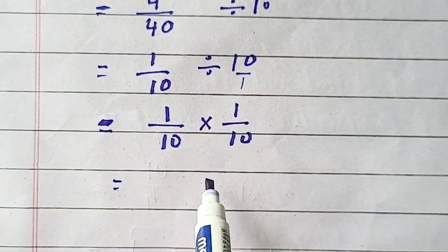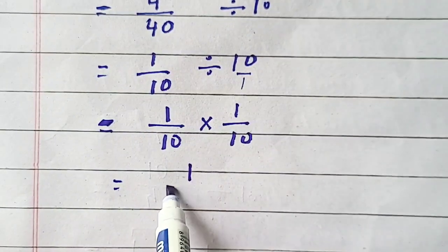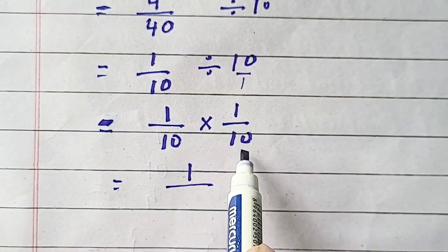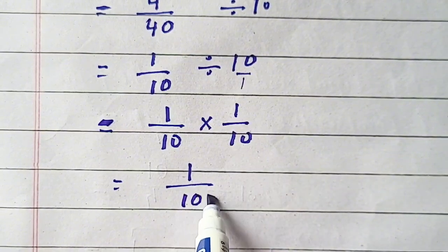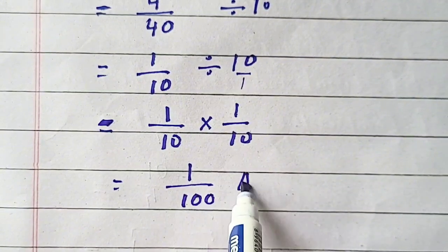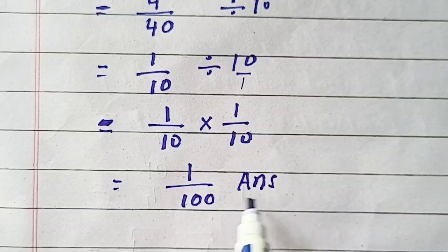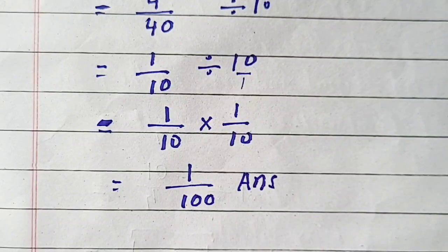Now 1 is multiplied by 1 so it will be 1 and 10 is multiplied by 10. So it will be 100 and 1 by 100 will be our answer. Thank you.